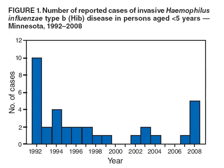Reported cases of invasive HiB in persons aged five years and under show a dramatic decline — from a high in 1992 down to near elimination by 2008 and later. The recurring pattern is partly due to some states not mandating vaccination, though the CDC recommends and ensures all children are properly vaccinated.